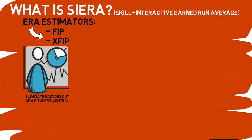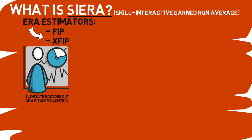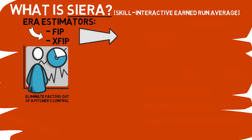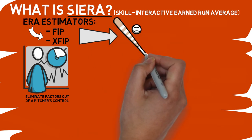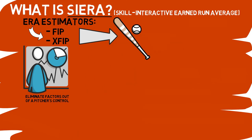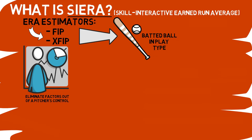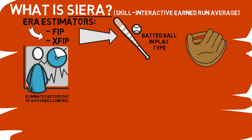Links as always are in the description down below. So what makes Sierra better than the stats we've talked about before? Well, it takes into account batted ball and play type. And we're not talking about singles, doubles, and triples here. We're talking about ground balls, line drives, fly balls, and popups.